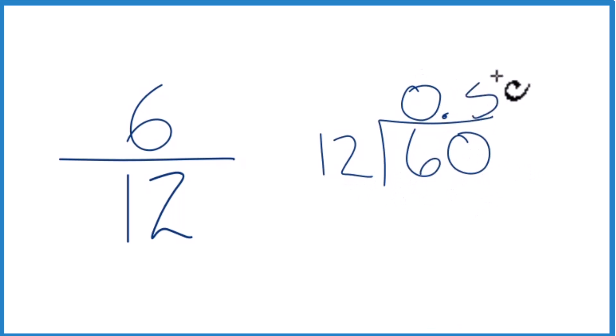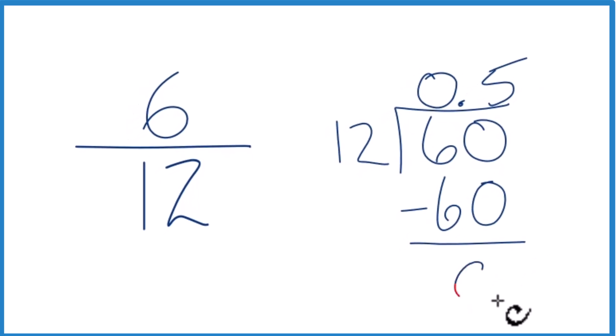Then 5 times 12 is 60. We subtract, and there's no remainder. So 6 divided by 12 is 0.5, and that's what we found before when we reduced 6 twelfths down to 1 half.